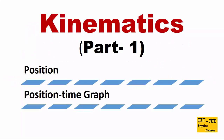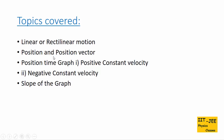Hello friends, we are going to start a kinematic series. Here in part 1 we will cover topics: linear or rectilinear motion, position and position vector, and position-time graph. We will study different cases of position-time graph for positive constant velocity, negative constant velocity, and slope of the graph.